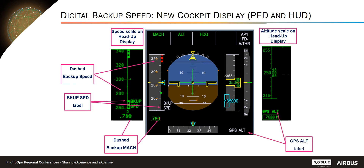Regarding the altitude, the label 'GPS altitude' appears when baro altitude is no longer used and is replaced by GPS altitude. Finally, the last digits of the altitude are also dashed, since GPS altitude is less accurate than baro altitude.